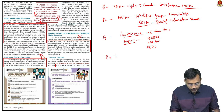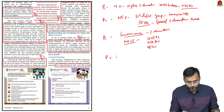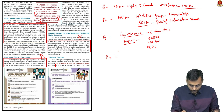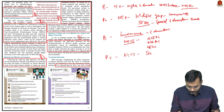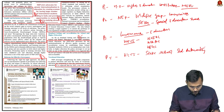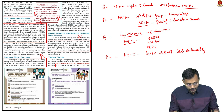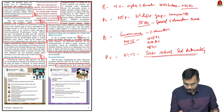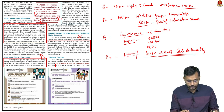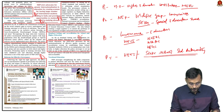The policy also proposes establishing a State School Standards Authority, especially for quality dimensions at the school level within each state. At the state level, there will be two separate institutions: the State School Standards Authority for school-level governance, and a state-level body under the Higher Education Commission of India for higher education. These form the institutional framework for education governance under NEP 2020.